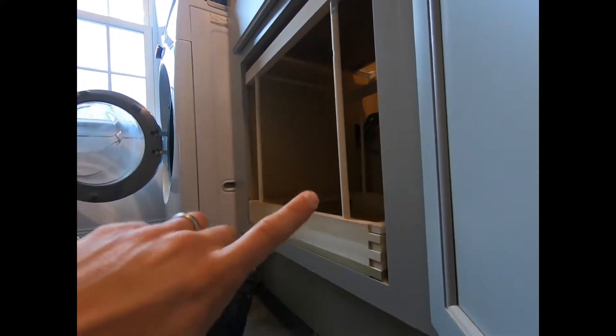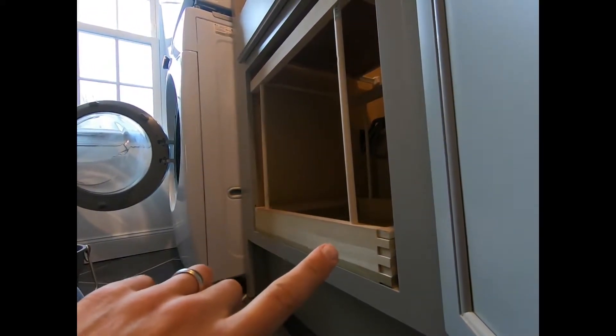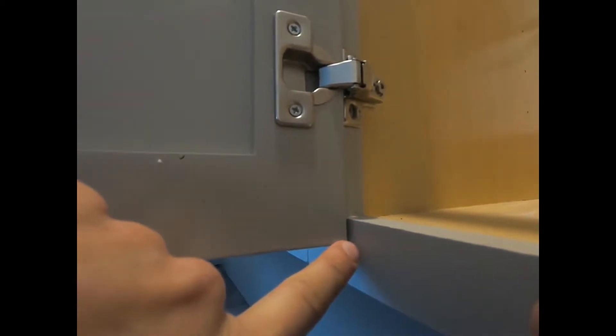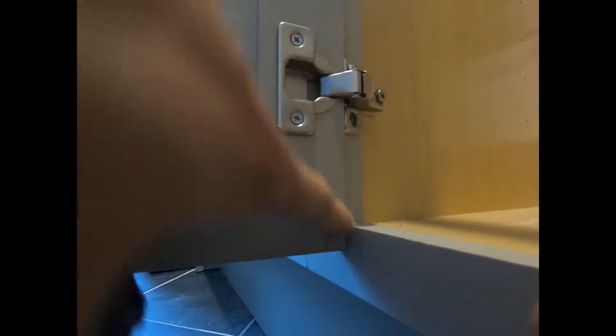All right guys, to measure where you want to place the pullout on the back of a cabinet, I opened a joining cabinet. And then I took this measure from the bottom of the door to the inside of the cabinet.